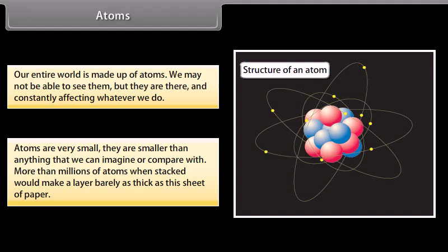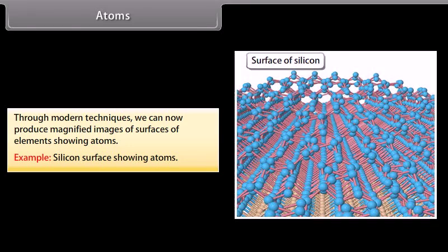More than millions of atoms, when stacked, would make a layer barely as thick as this sheet of paper. Through modern techniques, we can now produce magnified images of surfaces of elements showing atoms. Example: Silicon surface showing atoms.